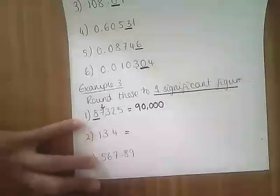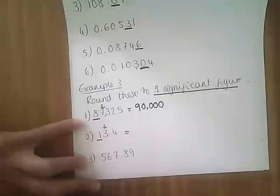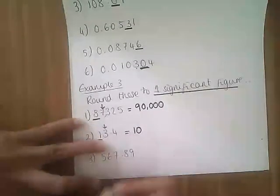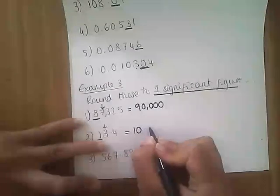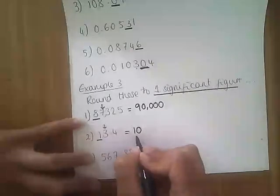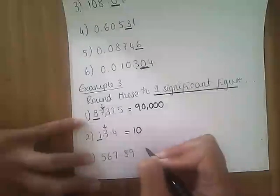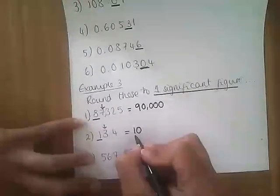Number two: underline our first significant figure. Is the number next door five or more? No. So the one stays as it is. I need to replace this with a zero, but if I've then got a decimal point, I do not need to put point zero on, because that does not change the value of the number. This is worth a 10 — I don't need to put the point zero on. If you did, it would actually be wrong. One significant figure means one number, the rest zeros.